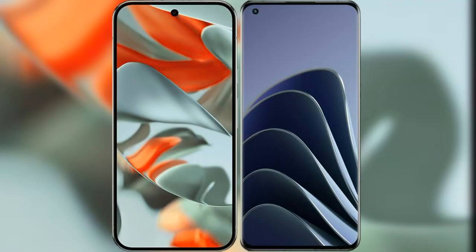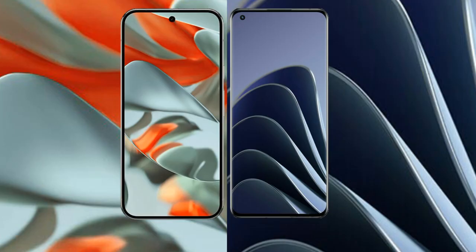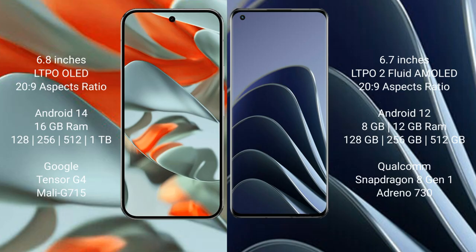I will compare the new Google Pixel 9 Pro XL with OnePlus 10 Pro. Google Pixel 9 Pro XL has a 6.8-inch LTPO LED display with a successor price of 229. OnePlus 10 Pro has a 6.7-inch LTPO 2 flat AMOLED display with a successor price of 229.